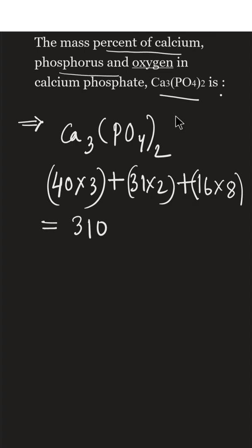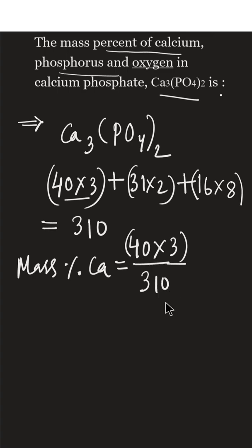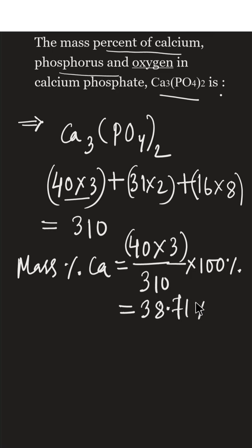The total molar mass of calcium phosphate is 310. Now we will find the mass percentage of each element one by one. For calcium: the amount of calcium is 40 × 3, divided by the total molar mass of 310, multiplied by 100. The mass percentage of calcium equals 38.71%.